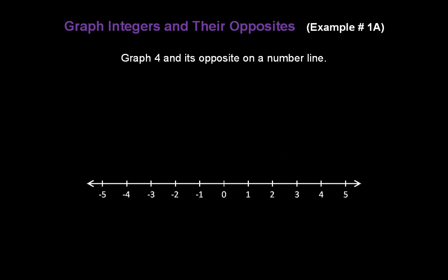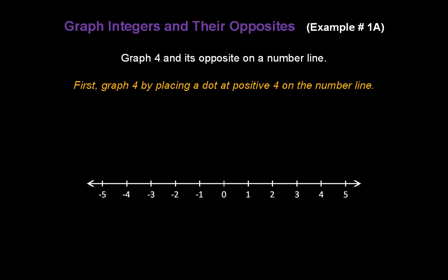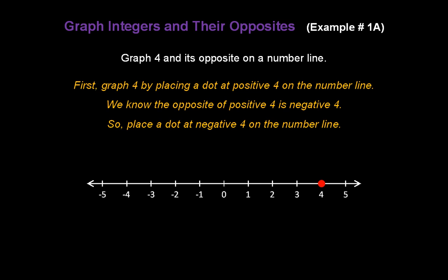Now let's graph integers and their opposites. Graph 4 and its opposite on a number line. First, we'll graph 4 by placing a dot at positive 4 on the number line, like this. We know the opposite of positive 4 is negative 4, so place a dot at negative 4 on the number line to complete our graph.